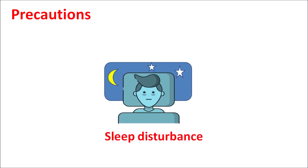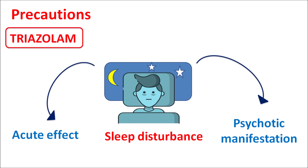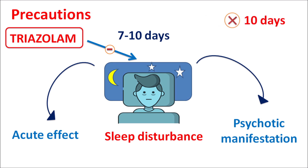Regarding precautions: trizolam can be used for sleep disturbances that may arise from acute causes such as change in location, travel, or anxiety. These disturbances can also be observed in psychotic disorders as a manifestation of psychosis. Trizolam can reduce the symptoms of sleep disturbances within 7 to 10 days. If symptoms are not reduced after 10 days, the insomnia may be due to psychotic symptoms. Since this drug does not treat psychosis, it should not be continued without improvement — other pathological conditions such as psychosis or depression should be monitored.